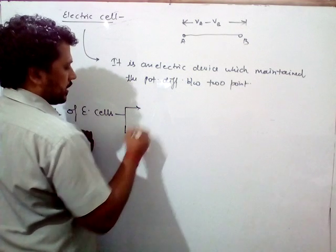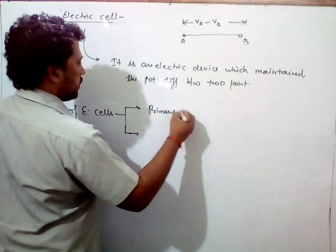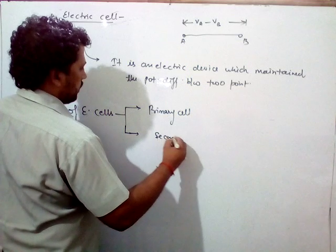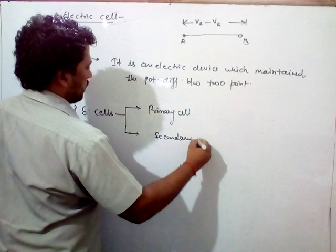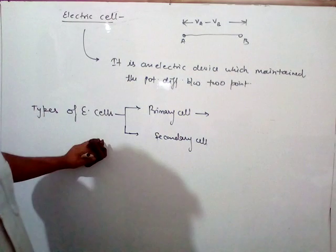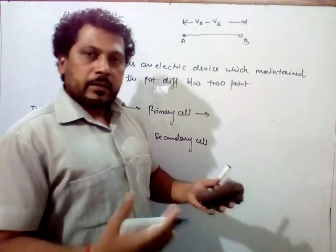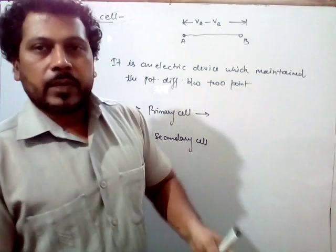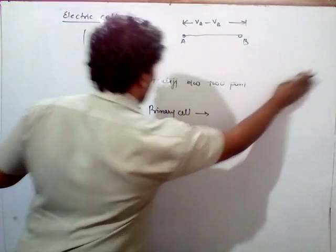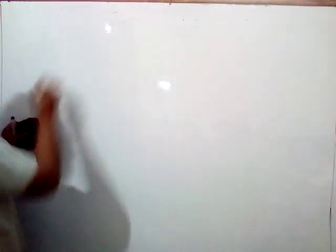So let me discuss about primary cells and secondary cells. Primary cells are those cells in which chemical energy is directly converted into electrical energy.